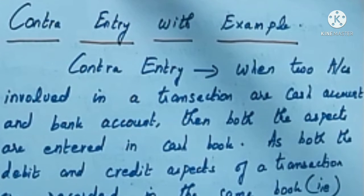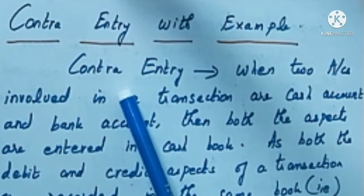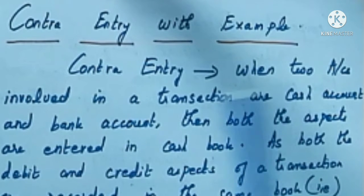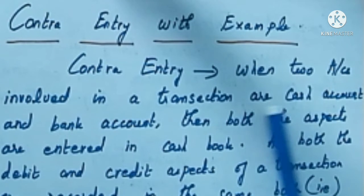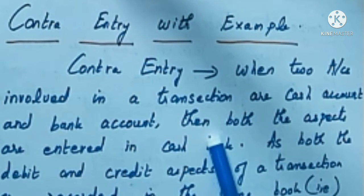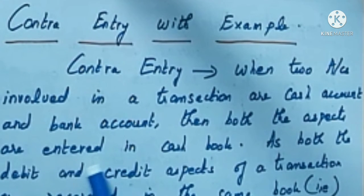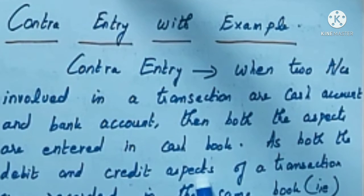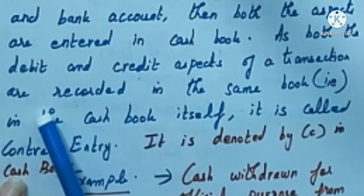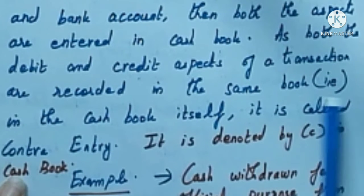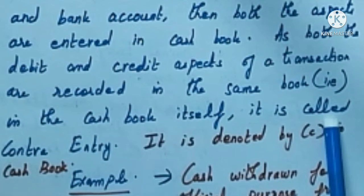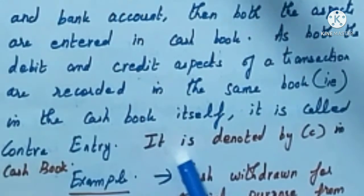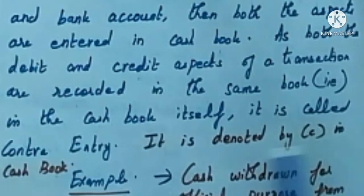Welcome to my channel. Today's topic is contra entry with examples. Contra entry means when two accounts involved in a transaction are cash account and bank account, then both aspects are entered in the cash book — both the debit and credit aspects of a transaction are recorded in the same book, that is the cash book itself. It is denoted by the letter C in the cash book.